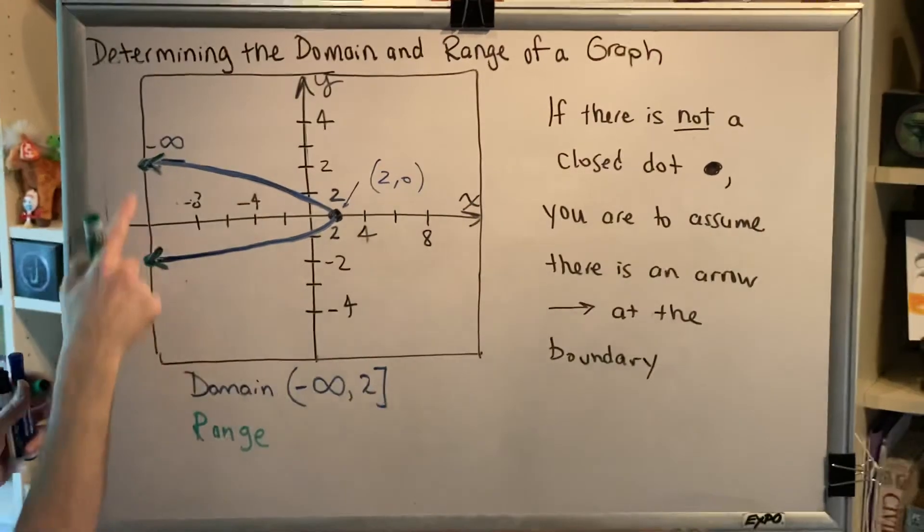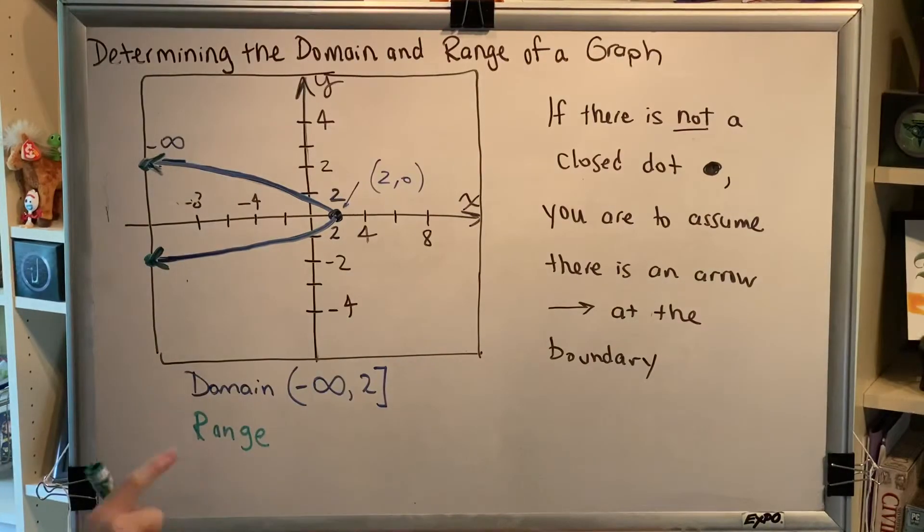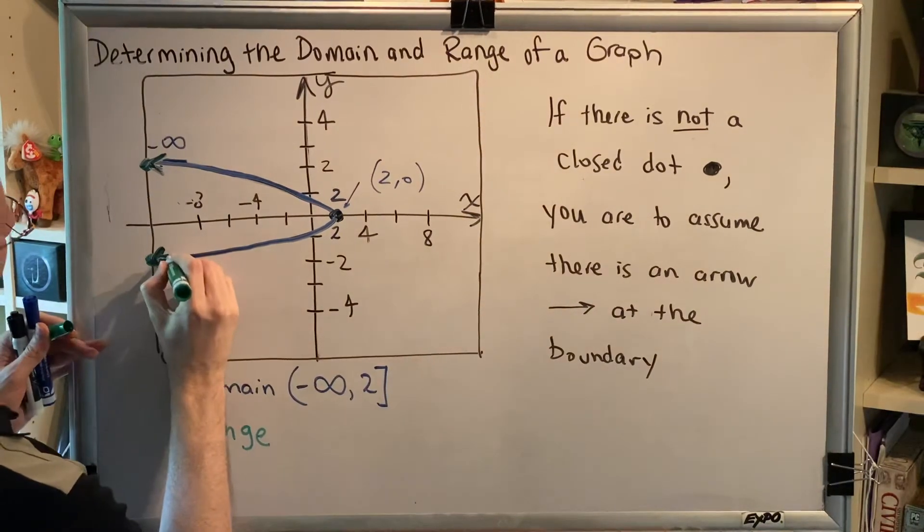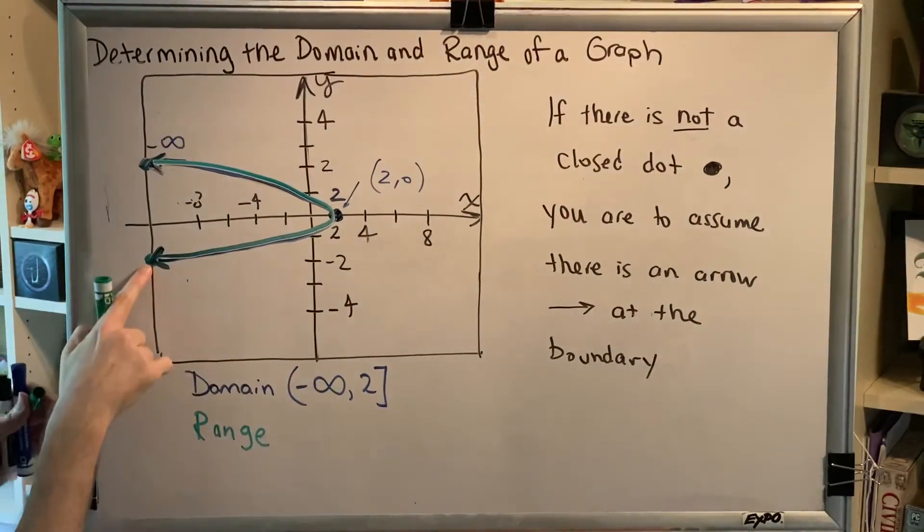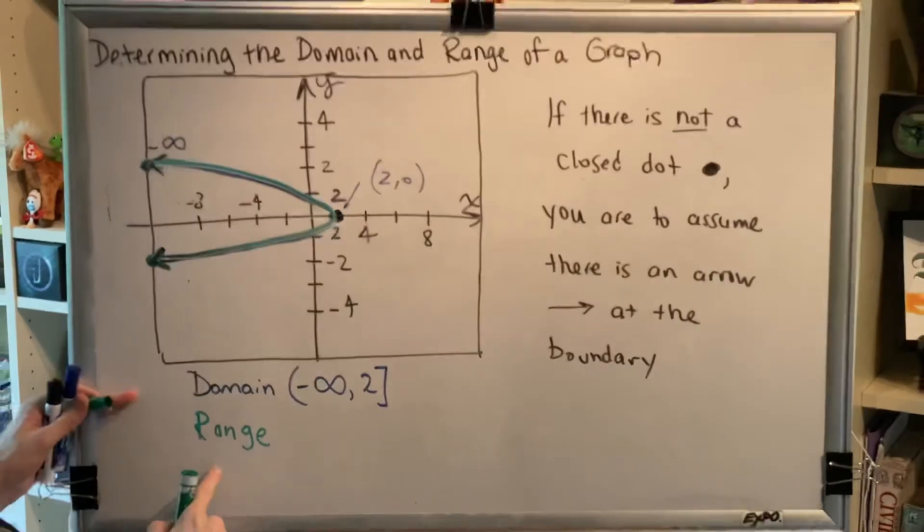Can we trace a path from the lowest point to the highest point by moving along our line or curve without picking up our marker? The answer is yes. Which means all y values from the lowest to the highest are represented in the range.